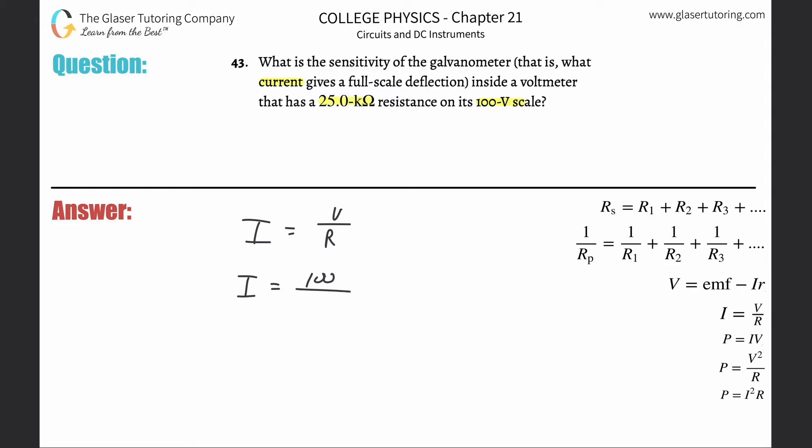It's 100 volts divided by the resistance. Remember, that has to be in ohms, not kilohms, so multiply by 10 to the third. Take out your calculator and do 100 divided by 25 times 10 to the third, and we get a value of about 4.00 × 10^-3 amps. You can do conversions as necessary, but that would be the answer.